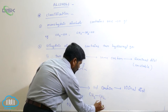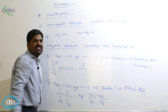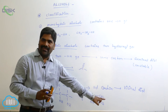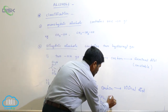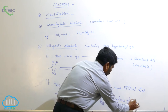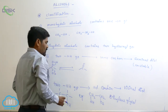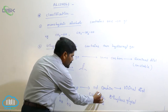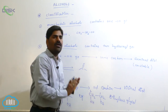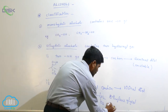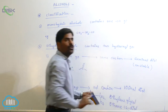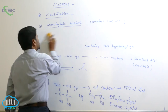An example of a vicinal diole is ethylene glycol: CH2OH-CH2OH. This is known as a vicinal system. If a two-carbon system contains two OH groups it is known as a glycol. The IUPAC name is ethane-1,2-diol, because two OH groups are present on adjacent carbon atoms.